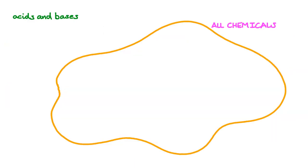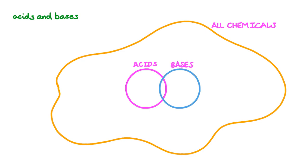Chemists like chemicals, but it's very hard to learn about every chemical individually — there are just so many. Instead, chemists look for patterns. We put chemicals in groups and we compare chemicals with one another. Two of these groups are acids and bases.